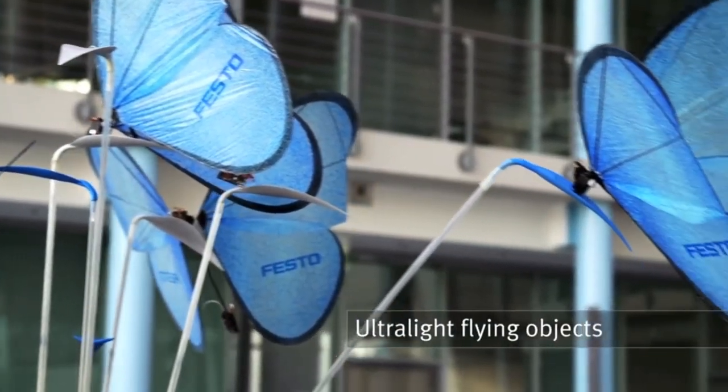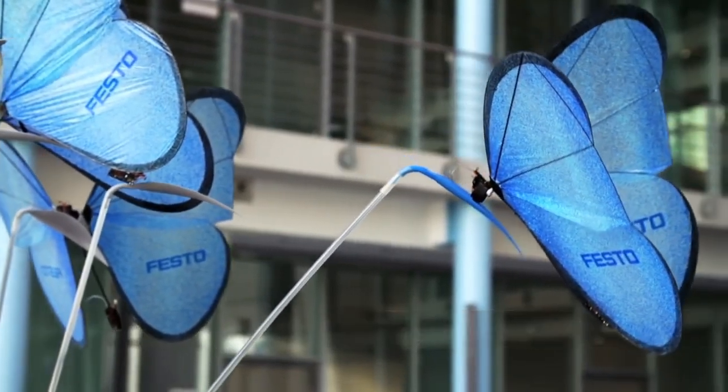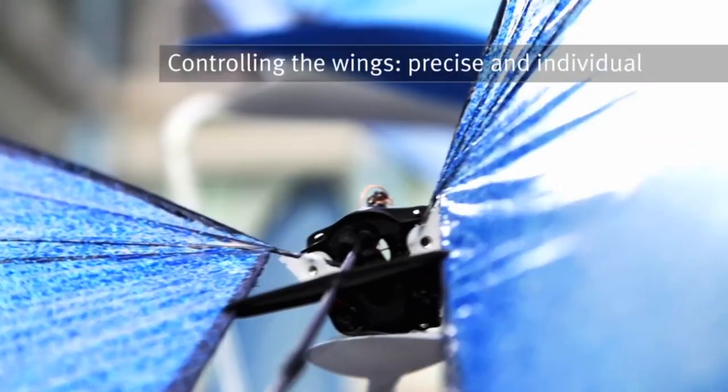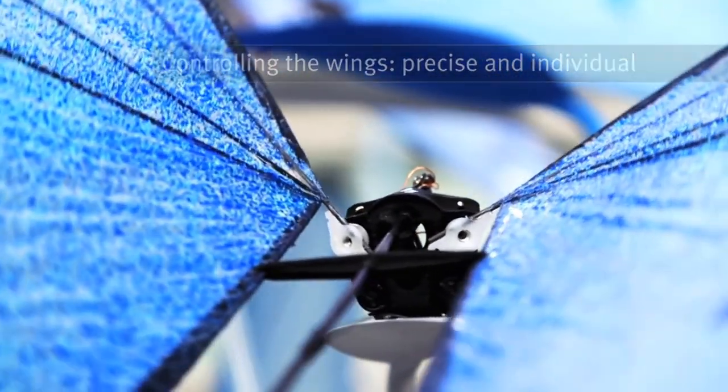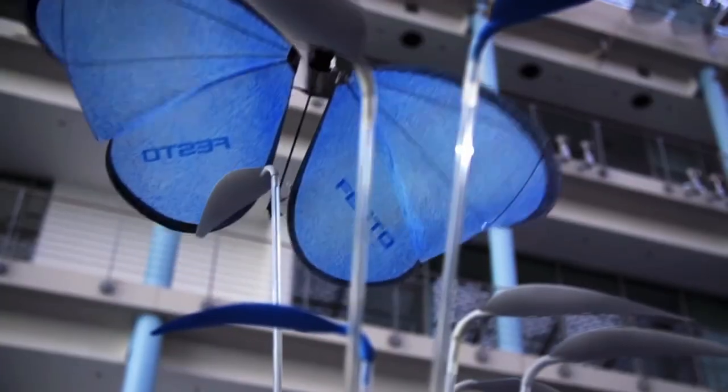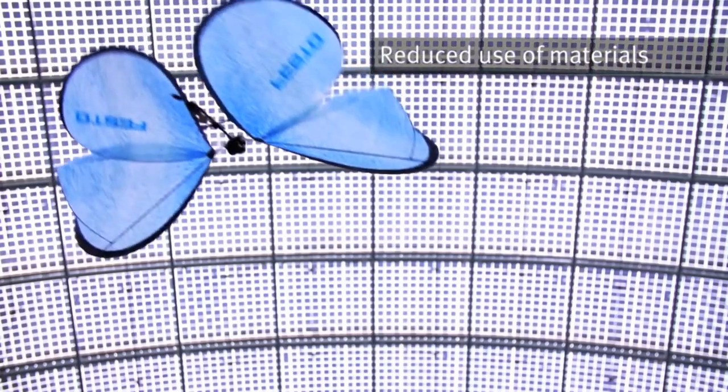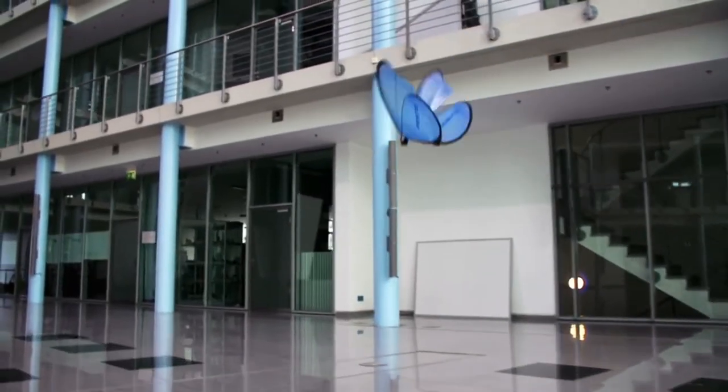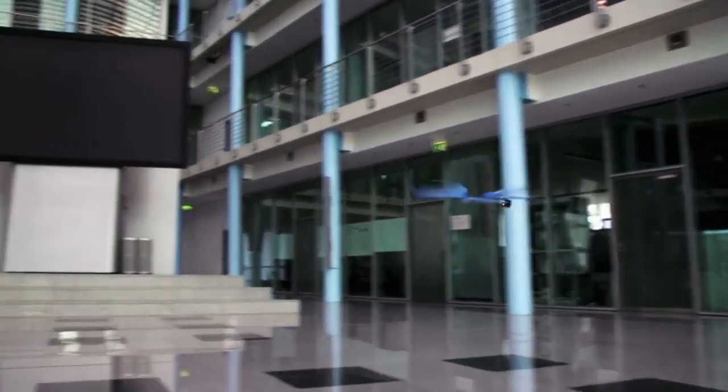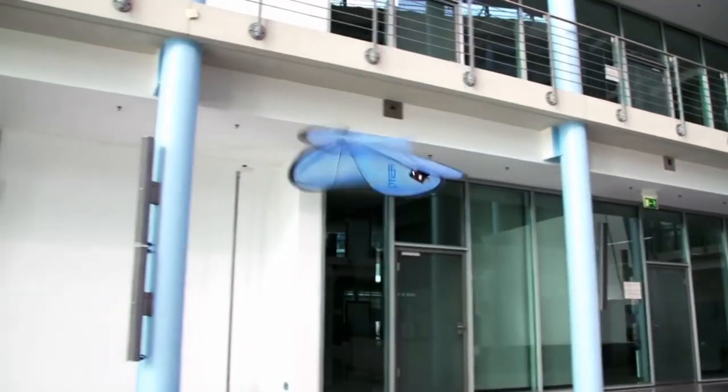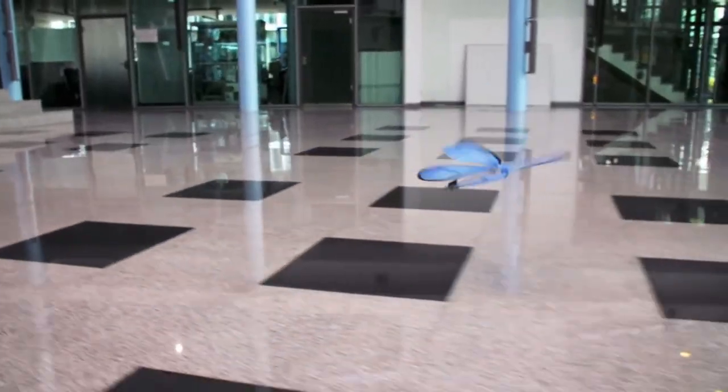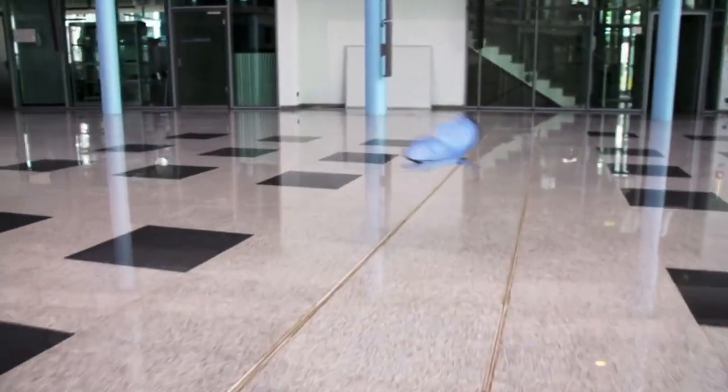The flight of the e-motion butterflies is coordinated by indoor GPS with infrared cameras. Ten cameras installed in the room record the butterflies using their infrared markers. The cameras transmit the position data to a central master computer, which coordinates the butterflies from outside. The intelligent networking system creates a guidance and monitoring system which could be used in the networked factory of the future. If you want to know more information about Festo's creations, click on the links below.